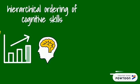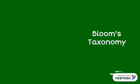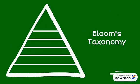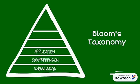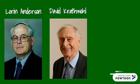What is Bloom's Taxonomy? It is a hierarchical ordering of cognitive skills that can help teachers and students to learn. It is composed of six components, starting from the bottom: knowledge, comprehension, application, analysis, synthesis, and evaluation.